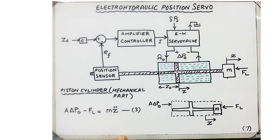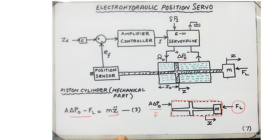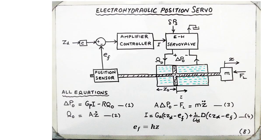Then comes the mechanical part of the piston cylinder model. Focusing on the dynamics of the piston connected to mass M and applying Newton's second law, the two forces are: the rightward fluid pressure force A times delta P naught, and the opposing disturbance force FL. Their difference equals the mass times acceleration, M times Z double-dot. This provides our third modeling equation.